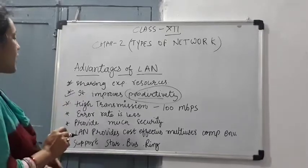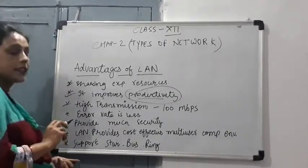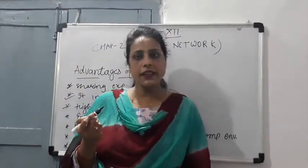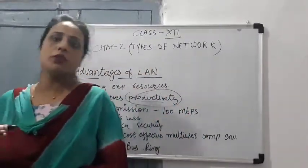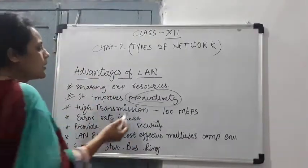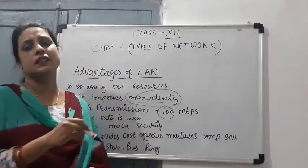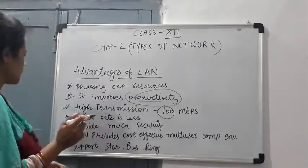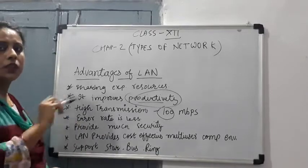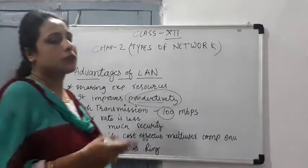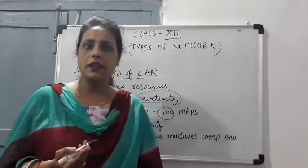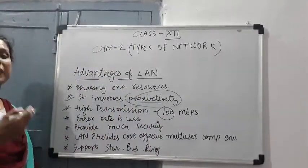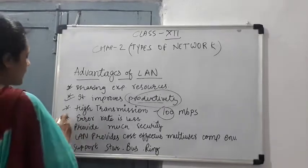Next topic is High Transmission Rate. If you are in a local area, the data transmission rate is high. Also, error rate is low. In a local area network there is no other error, and we are using good networks and good data. Error rate is low.